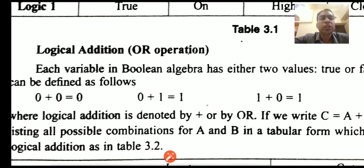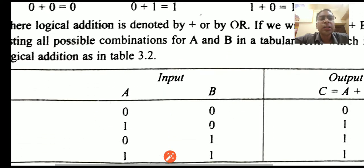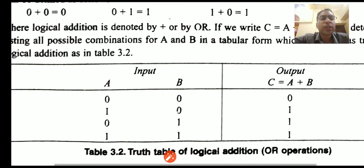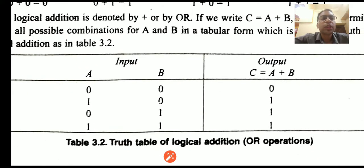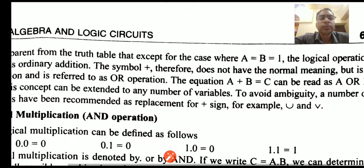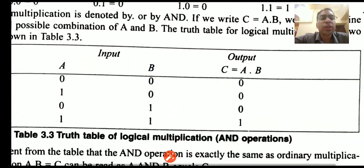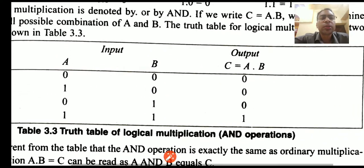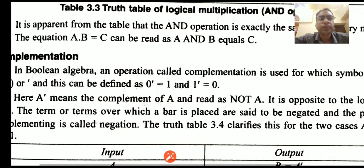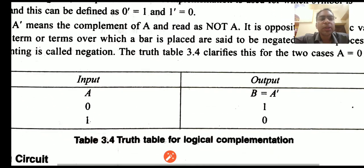The basic operations of the Boolean algebra are the OR operation — you can see the truth table of the OR operation, which we had already seen in predicate logic. Next is the AND operation; again the truth table for the AND operation can be seen, which we had already seen in predicate logic. It is similar. And the complement operation is also shown.